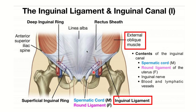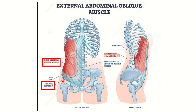It is obvious that the inguinal ligament arises from this group of fibers, and these fibers are part of the external oblique muscle. So the inguinal ligament arises from the external oblique muscle. In the second picture, we can see the inguinal ligament arises from the anterior superior iliac spine to the pubic tubercle, and it is a continuation of the external oblique muscle.